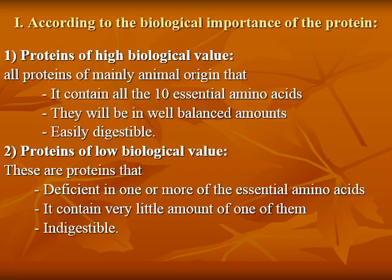Classification of proteins: according to biological importance, proteins of high biological value are mainly of animal origin, containing all 10 essential amino acids in a well-balanced amount and are easily digestible. The second type, proteins of low biological value, are deficient in one or more essential amino acids, contain very little of these amino acids, and may be indigestible.